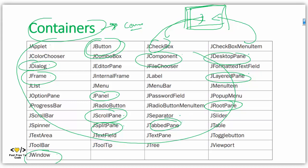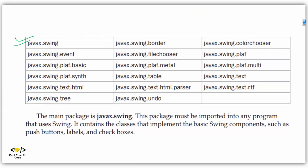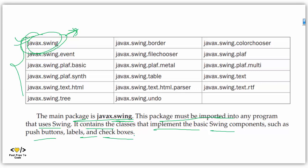Now, here are some packages we will use in our application. All the components, containers, and related classes for Swing are in these packages. The main package is javax.swing, and the main class JFrame is in the javax.swing package. This package must be imported in your application code to use Swing. It contains classes that implement the basic Swing components such as push buttons, labels, and checkboxes.